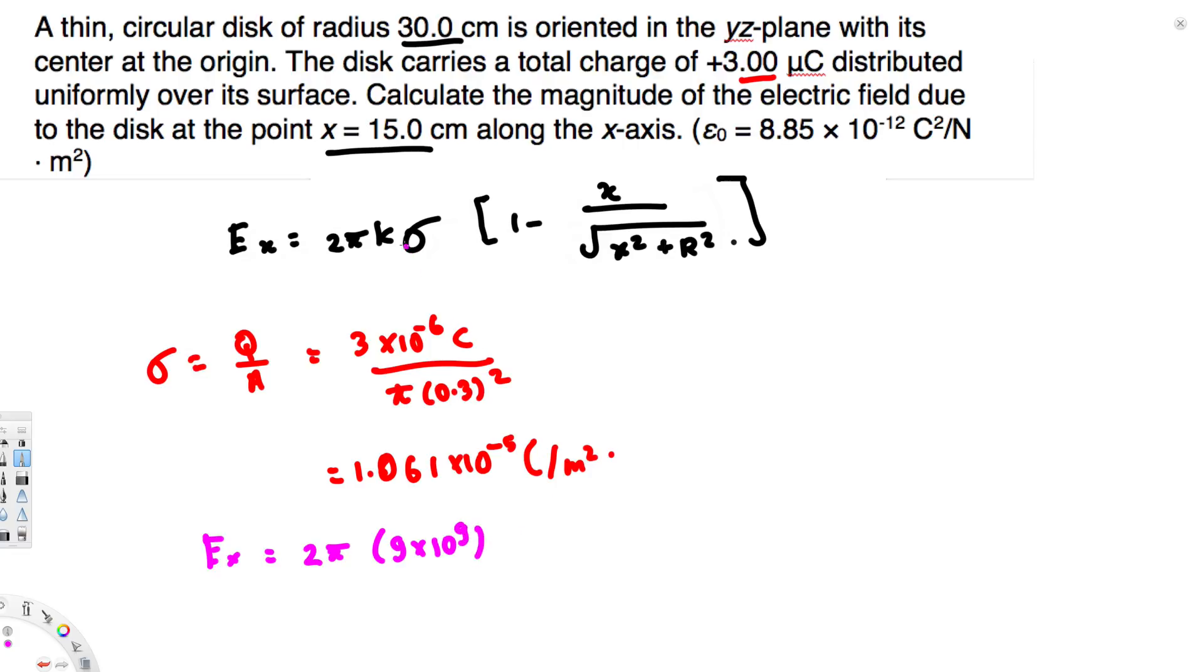equals 2π times k, which is 9 × 10⁹, times the sigma value we just found—1.061 × 10⁻⁵—times [1 minus (the point distance is 15 centimeters, in meters that's 0.15)